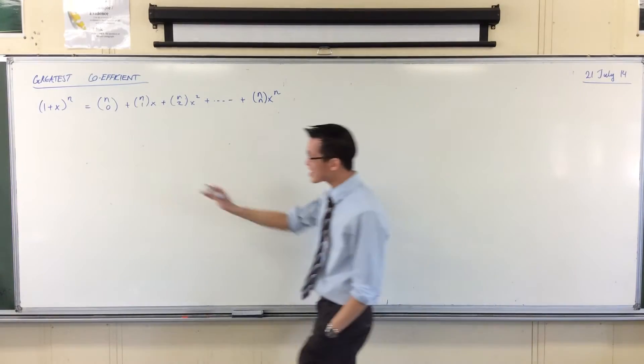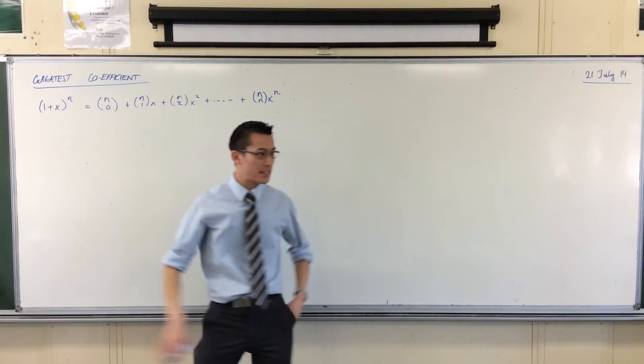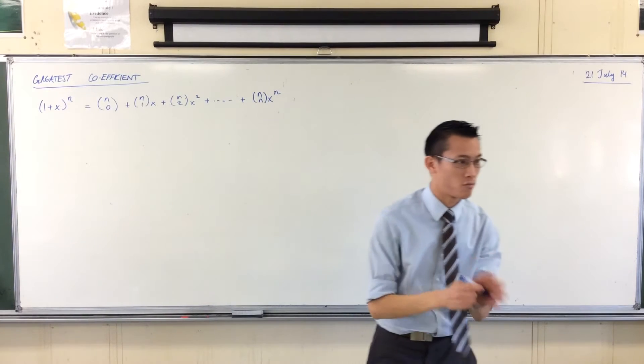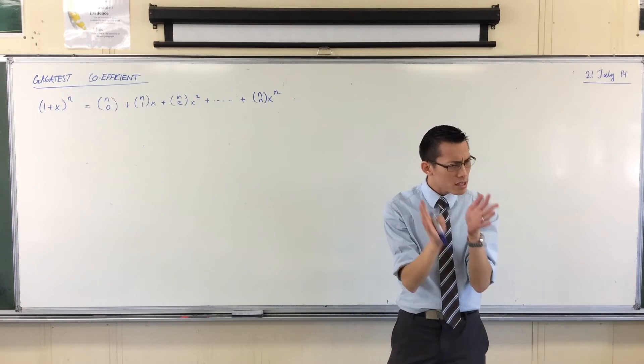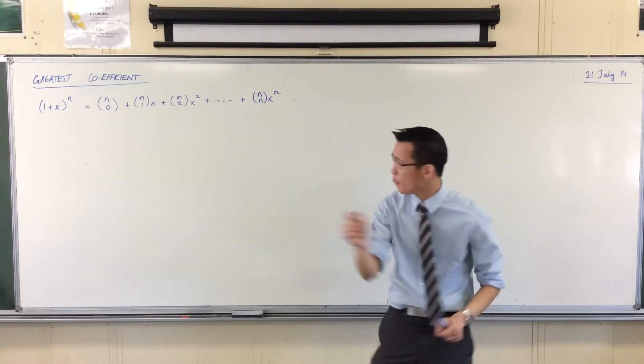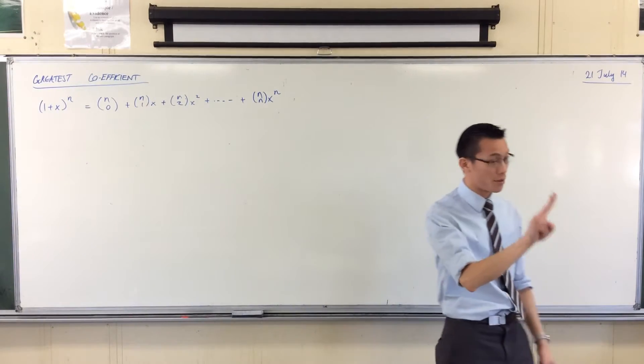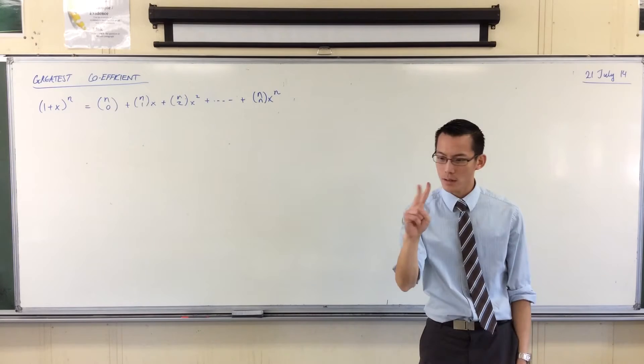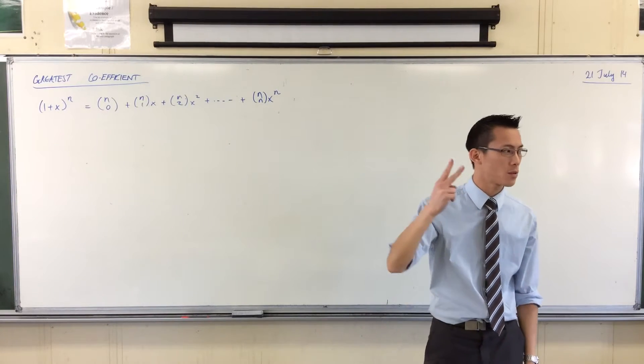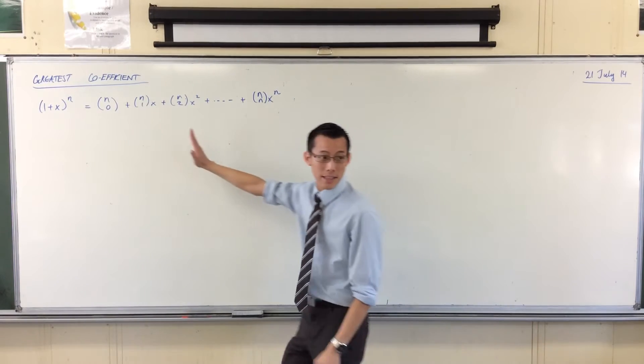So far we have noticed that with this particular expansion, the greatest coefficient, the biggest number, there's either one or two of them. But wherever the one or two are, they are always positioned right in the middle, aren't they?